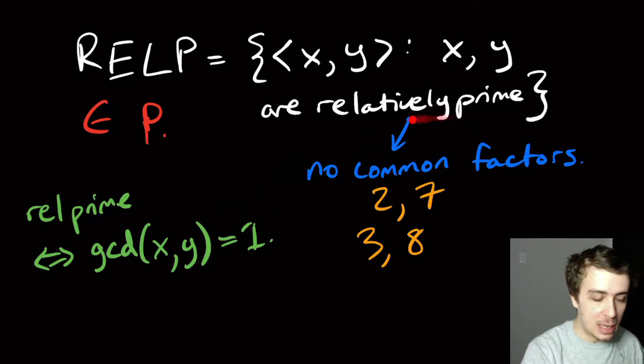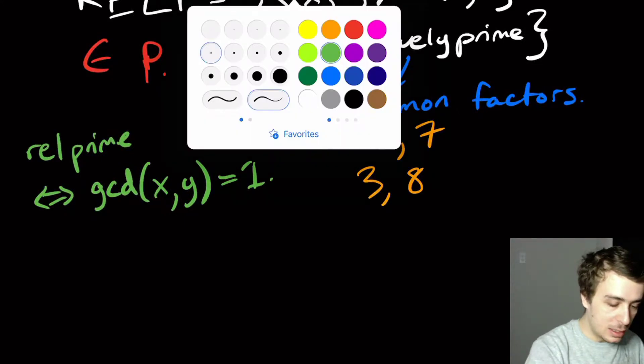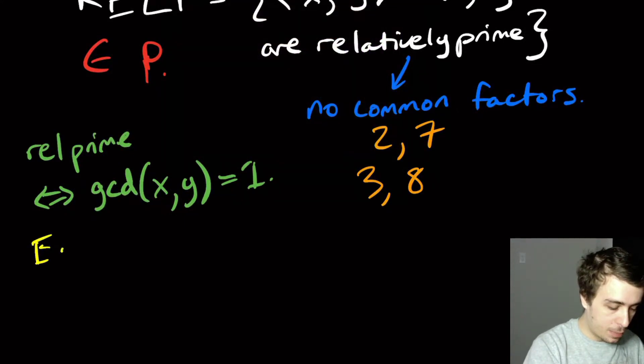You can show that they're not relatively prime if it's not equal to 1. So the way to go about this is to use Euclid's GCD algorithm.